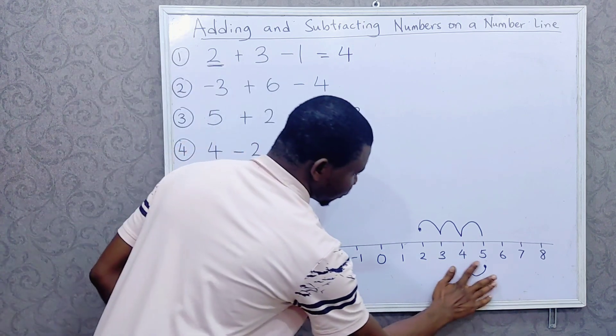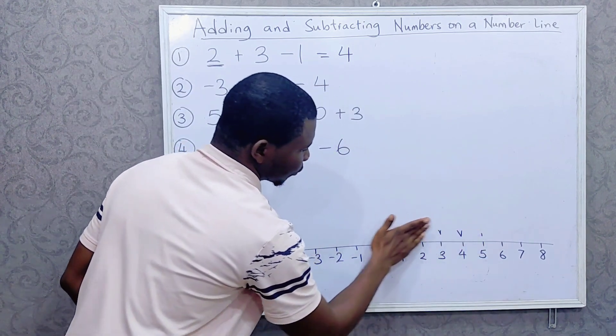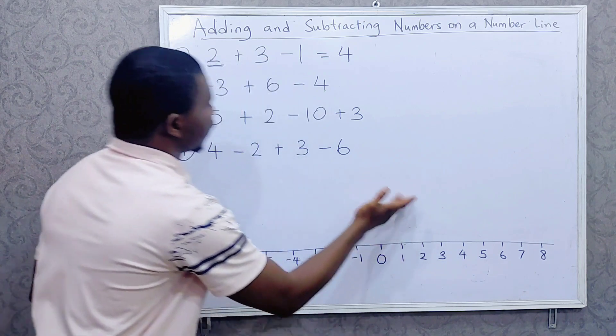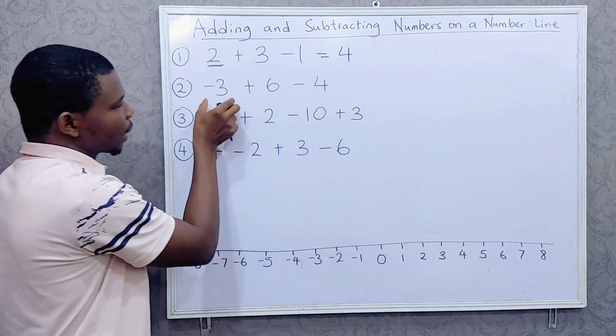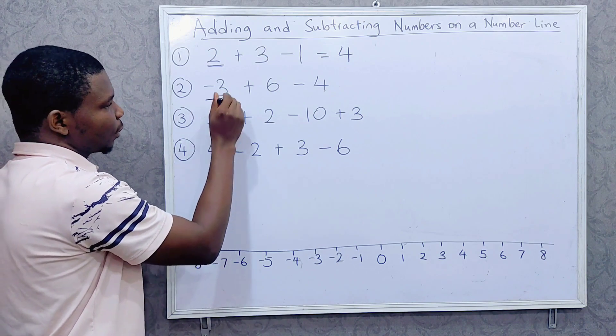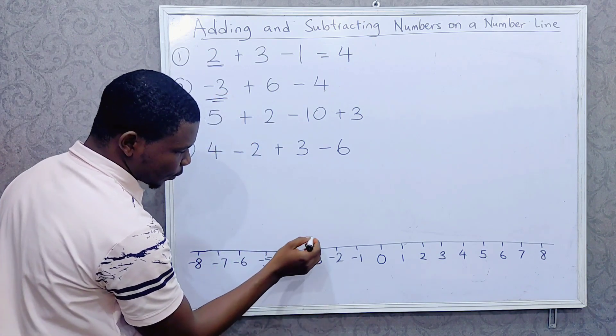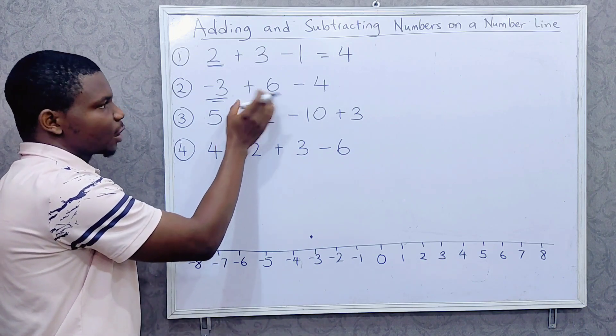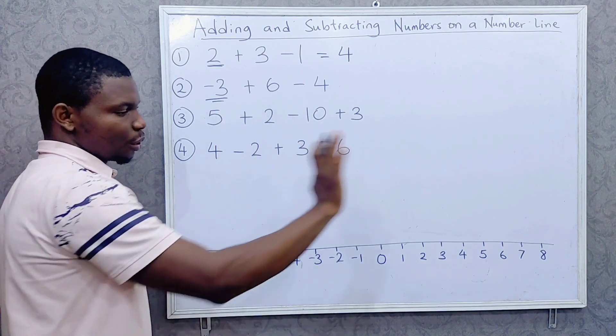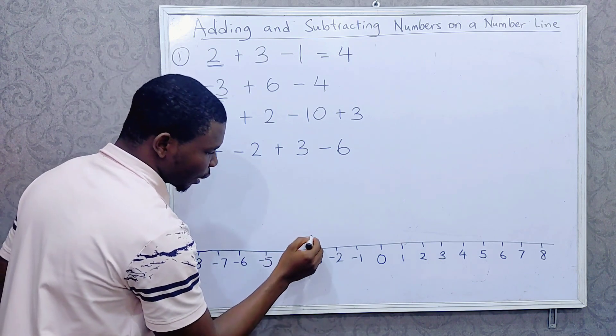Minus 3 plus 6 minus 4. So we start at minus 3. We locate minus 3, this is it. Then we go forward 6 times. Positive means you are going to the right, so let's go forward 6 times.